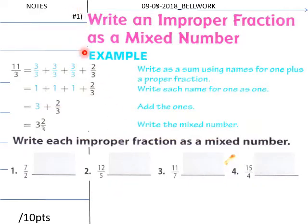Here is the bellwork for this lesson. Writing improper fraction as a mixed number. So you go from here to here, and then here's your process of doing that. Write each improper fraction as a mixed number. Students get on that. 7 over 2, 12 over 5, 11 over 7, 15 over 4.